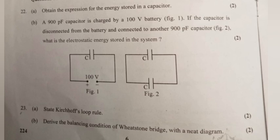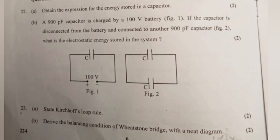Question 22A: Obtain the expression for the energy stored in a capacitor. dW equals V dot dQ. dW equals Q by C dQ. Total work done W equals integral Q by C dQ. W equals 1 by C integral Q dQ. W equals 1 by C Q² by 2 equals half Q² by C. Q equals CV then W equals half CV².